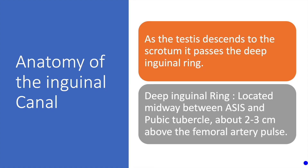Anatomy of the inguinal canal. In males, as the testis descends from the abdominal cavity to the scrotum, it passes the deep inguinal ring, which is a defect in the transversalis fascia. It is located deep to the abdominal muscles. The deep inguinal ring is located midway between the ASIS — the anterior superior iliac spine — and pubic tubercle, about 2–3 cm above the femoral artery pulse in the groin. The inferior epigastric artery lies just medial to the deep inguinal ring and is an important landmark to differentiate indirect from direct hernia.